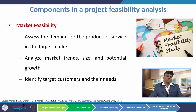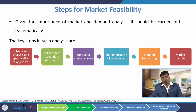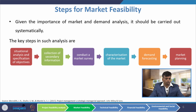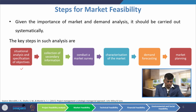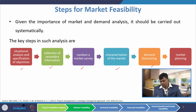We will cover various aspects of market feasibility in detail. Given the importance of market and demand analysis, it should be carried out systematically. The key steps are: first, situational analysis and specification of objectives; then collection of secondary information; then conducting a market survey; then characterization of the market by profiling it; then demand forecasting; and finally market planning.